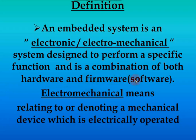To elaborate: electromechanical means it relates to or denotes a mechanical device that is electrically operated — meaning a physical form of device exists and it is operated electrically. Such devices are called electromechanical devices, and an embedded system is a clear example of one.